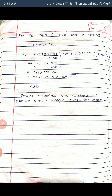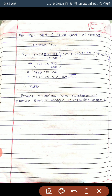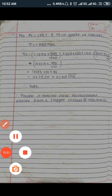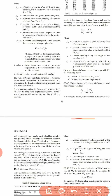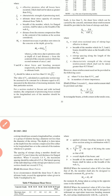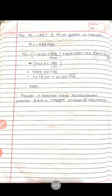Since Vcr is safe and the section does not require designed shear reinforcement, we provide nominal shear reinforcement: 8 mm two-legged stirrups at 450 mm center-to-center. We have not designed the shear reinforcement in detail here. If Vcd were to exceed the limit, we would calculate the required area of shear reinforcement stirrups and their spacing using the relevant formulas.